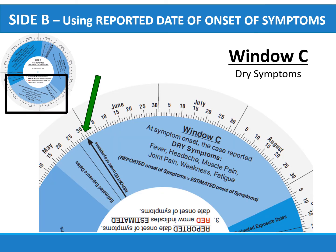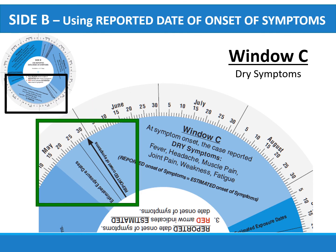For cases reporting dry symptoms at onset — like fever, headache, muscle pain, joint pain, generalized weakness, or fatigue — the wheel assumes that the reported date that dry symptoms started is also the estimated date of overall symptom onset. To use the wheel in Window C, place the black arrow on the reported date of dry symptom onset. In this presentation, the black arrow is on May 31st. For cases presenting with dry symptoms, the date of reported onset equals the date of estimated onset of symptoms, and the exposure window is from May 14th to May 27th.